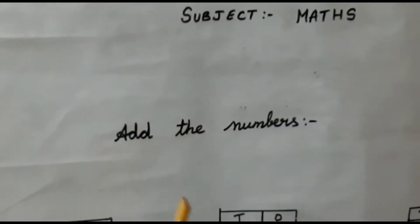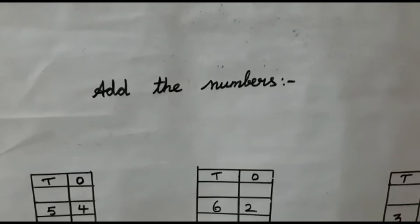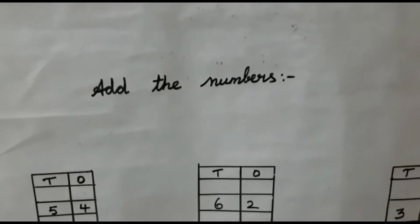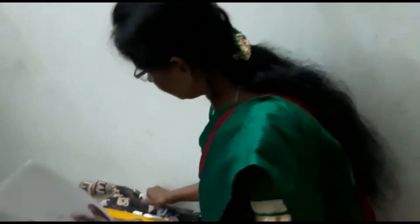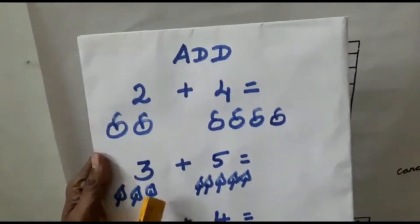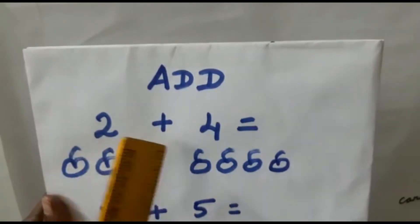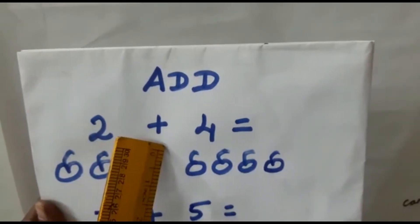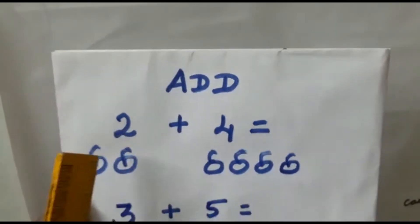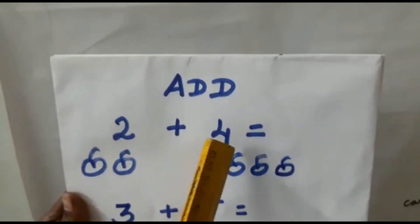Numbers — we are going to see addition first. Here a simple addition sum is given. You can see the number 2. Addition means this is the sign plus. I have given 2 plus 4.